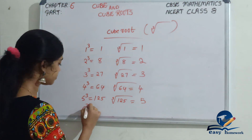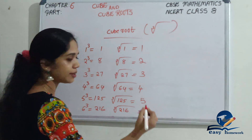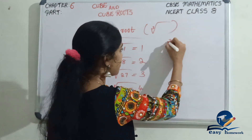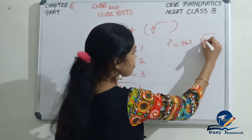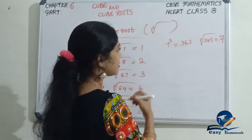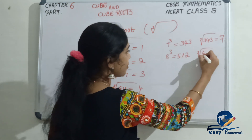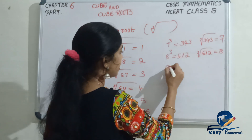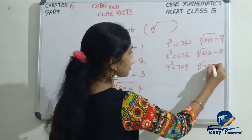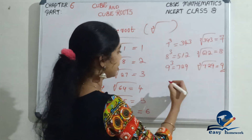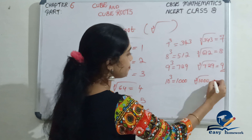6 cubed is 216. 7 cubed is equal to 343, so the cube root of 343 is equal to 7. 8 cubed is equal to 512, so the cube root of 512 is equal to 8. 9 cubed is equal to 729, so the cube root of 729 is equal to 9. 10 cubed is equal to 1000, so the cube root of 1000 is equal to 10.